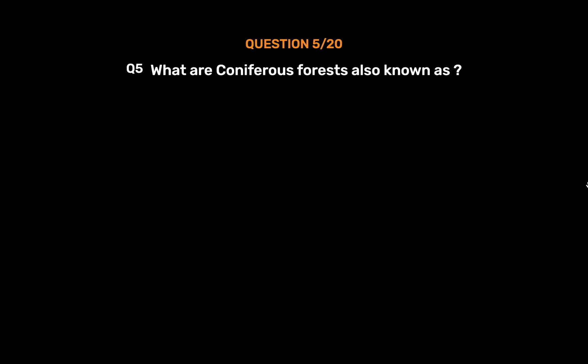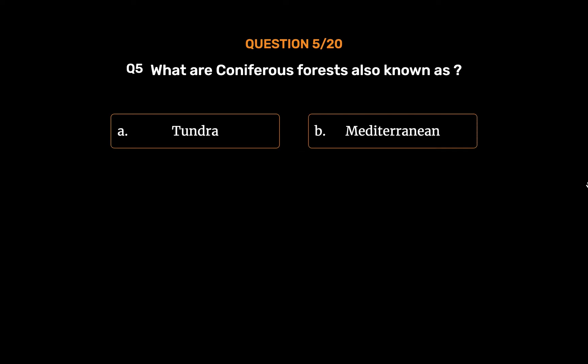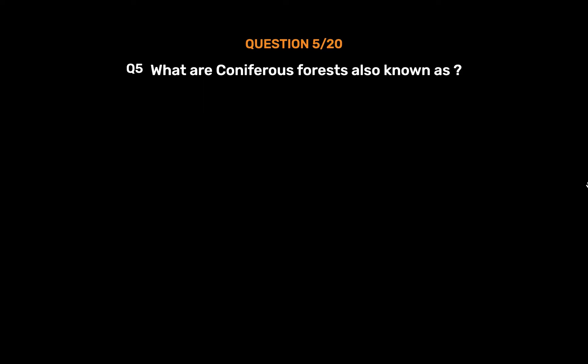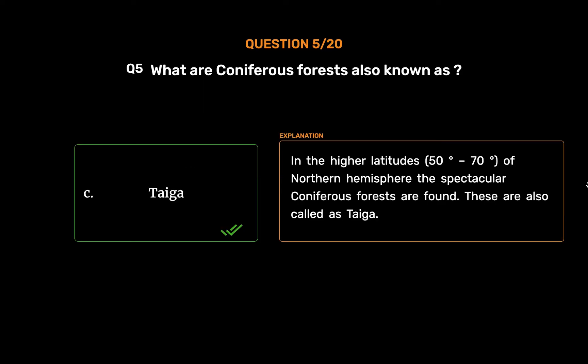Question number 5: What are coniferous forests also known as? Option A: Tundra. Option B: Mediterranean. Option C: Taiga. Option D: None of these. The correct answer is Option C: Taiga. In the higher latitudes, 50 to 70 degrees of the northern hemisphere, the spectacular coniferous forests are found. These are also called taiga.